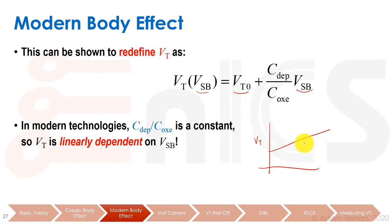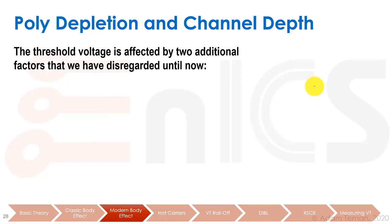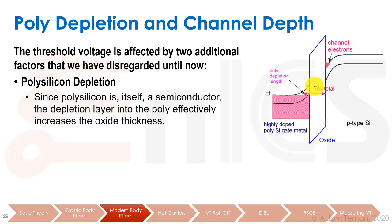From 90 nanometers and below, the body effect is actually pretty small and doesn't affect us as much. In FinFETs and similar advanced structures, it's an even lesser effect. So that was the first basic phenomenon that changes VT from the value VT0 provided by the fab. Other factors include poly depletion and channel depth.